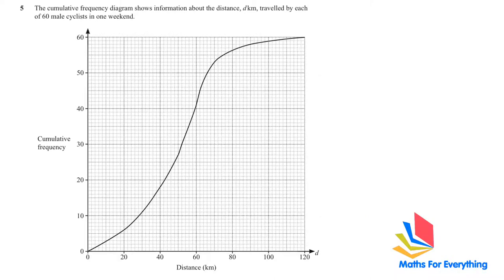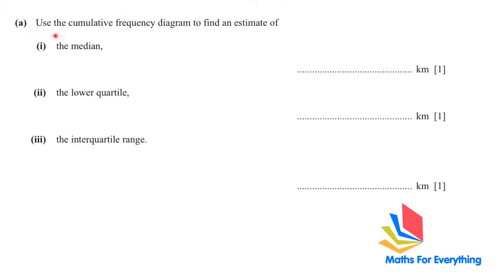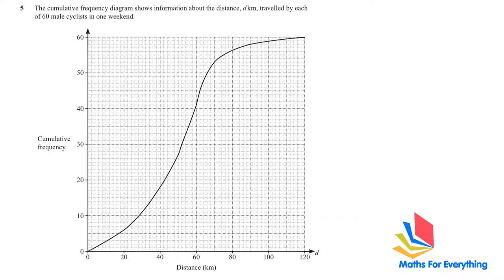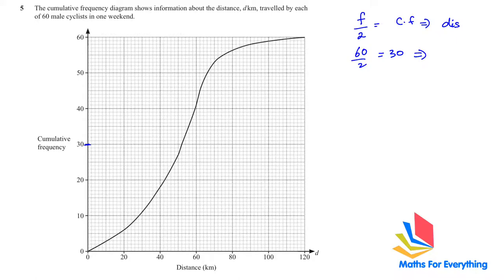Question number five: we have a cumulative frequency diagram showing the distance traveled by each of 60 male cyclists in one weekend. To find the median, divide the frequency by 2: 60 / 2 = 30. Reading off the graph at cumulative frequency 30 gives a corresponding distance of 52 kilometers.